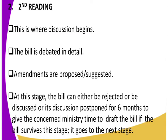If the bill survives the second reading, it goes to the next stage. To summarize: in the second reading, deeper discussions are held. The bill may be postponed for six months to allow the ministry to draft it, and more consideration is given to the suggestions that have been raised. If it survives the second reading, it goes to the committee stage.